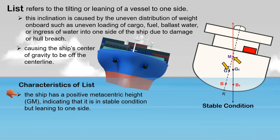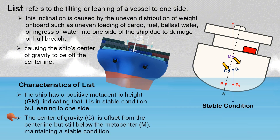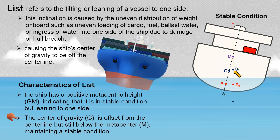The center of gravity G is offset from the centerline but still below the metacenter M, maintaining a stable condition. If you are not familiar with the ship's metacentric height GM, there is a separate video about this — kindly check the link in the description.